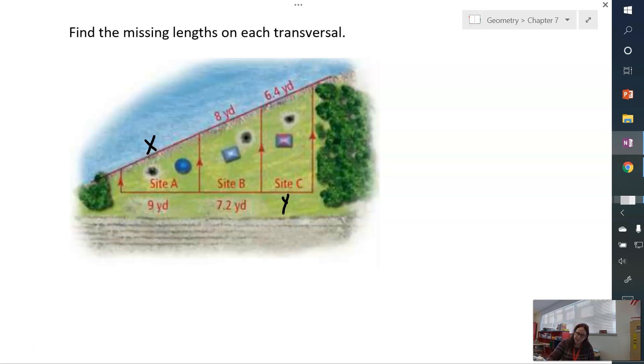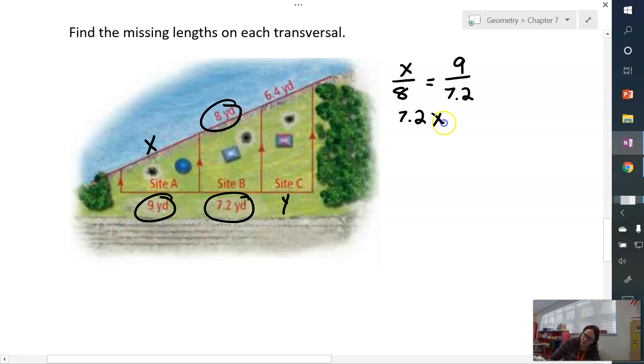So for X, I'm going to say that X over 8, so I'm using the 8 yards here, and I'm going to use the 9 and the 7.2 yards, that's going to equal 9 over 7.2. Now, that's my geometry. I've used my side splitter theorem, and I've written my proportion. Now, just cross multiply. And I get 7.2X equals 72. X equals 10. So right here, this is 10.